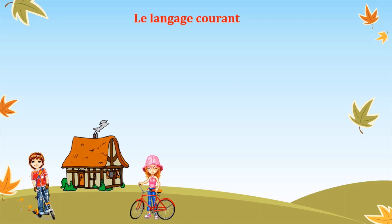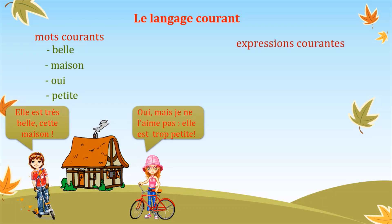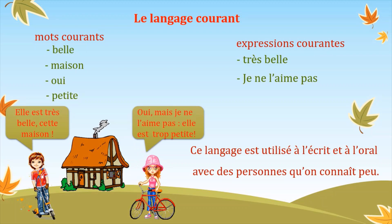Passons maintenant au langage courant, et on va travailler sur la même situation : « Elle est très belle cette maison. — Oui, mais je ne l'aime pas. Elle est trop petite. » Comme vous voyez, on a utilisé comme mots courants : belle, maison, oui, petite. Et comme expression courante : très belle, je ne l'aime pas. Ce langage est utilisé à l'écrit et à l'oral, avec des personnes qu'on connaît peu.